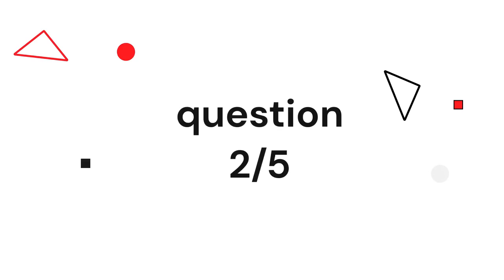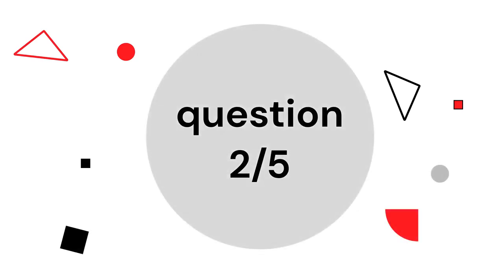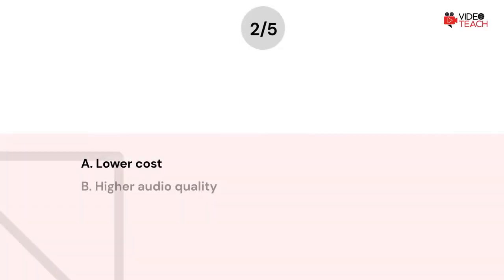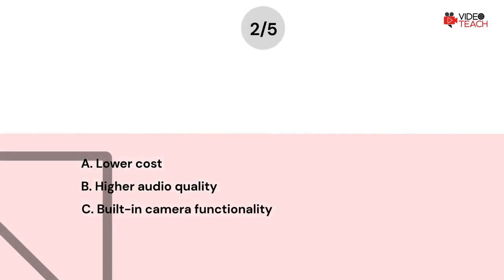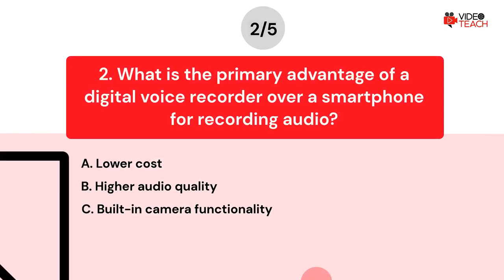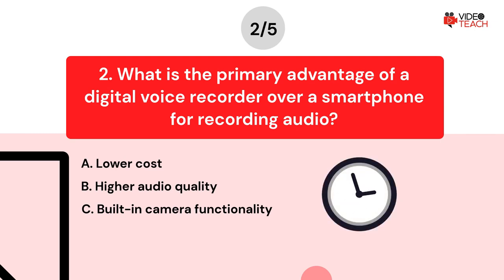Question number two. What is the primary advantage of a digital voice recorder over a smartphone for recording audio? Option A: Lower cost. Option B: Higher audio quality. Option C: Built-in camera functionality. Now you have about 15 seconds to think about your answer.